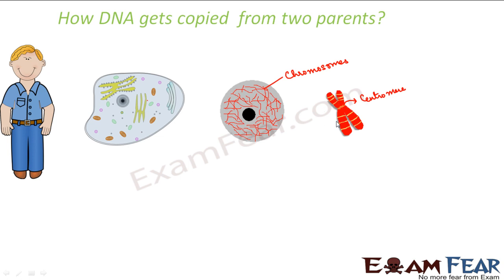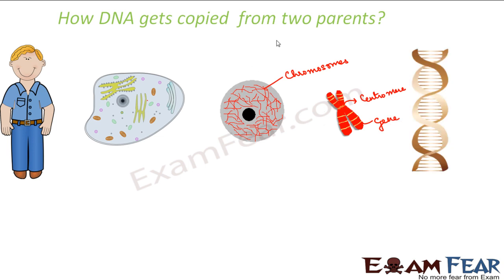You also see some yellow colored structures here - these structures are nothing but genes. When you look at these genes closely, we see that they are made up of DNA. DNA is deoxyribonucleic acid. This DNA actually contains the information which is needed for protein synthesis - DNA tells what kind of proteins need to be synthesized.